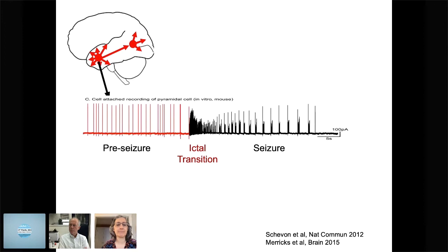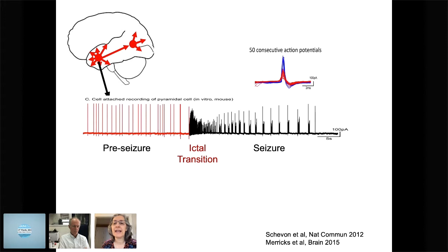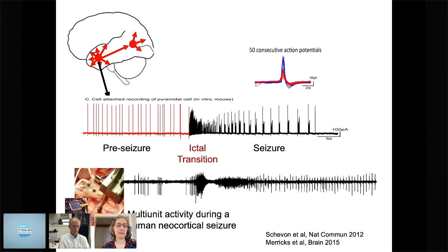If you imagine a seizure focus and somehow manage to record a single neuron in a patient with focal epilepsy during an event, this is roughly what you would expect to see. This is actually a mouse recording of a seizure, and you can see there is an abrupt ictal transition heralded by tonic firing, followed by a series of bursts known as paroxysmal depolarizing shifts. Looking at the action potential wave shapes, there is a very dramatic change — a loss of amplitude and a widening of the action potential waveform. When we look at single unit or multi-unit activity during a seizure in a patient, we see much the same thing: an abrupt ictal transition from the pre-seizure to the seizure state with all these same hallmarks.